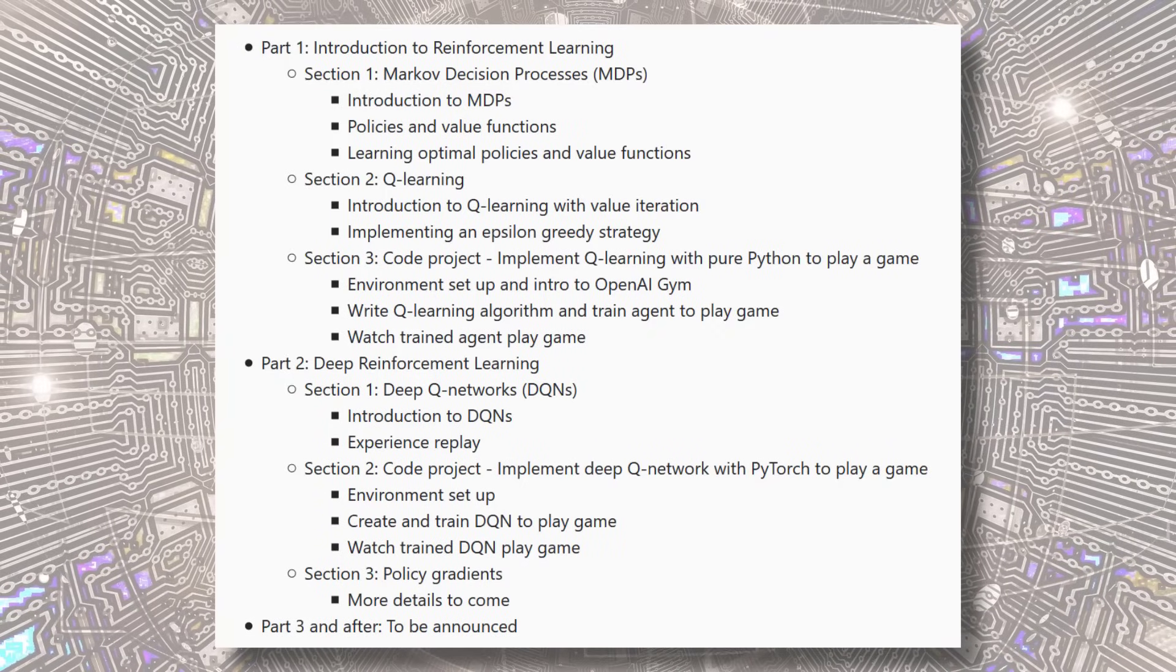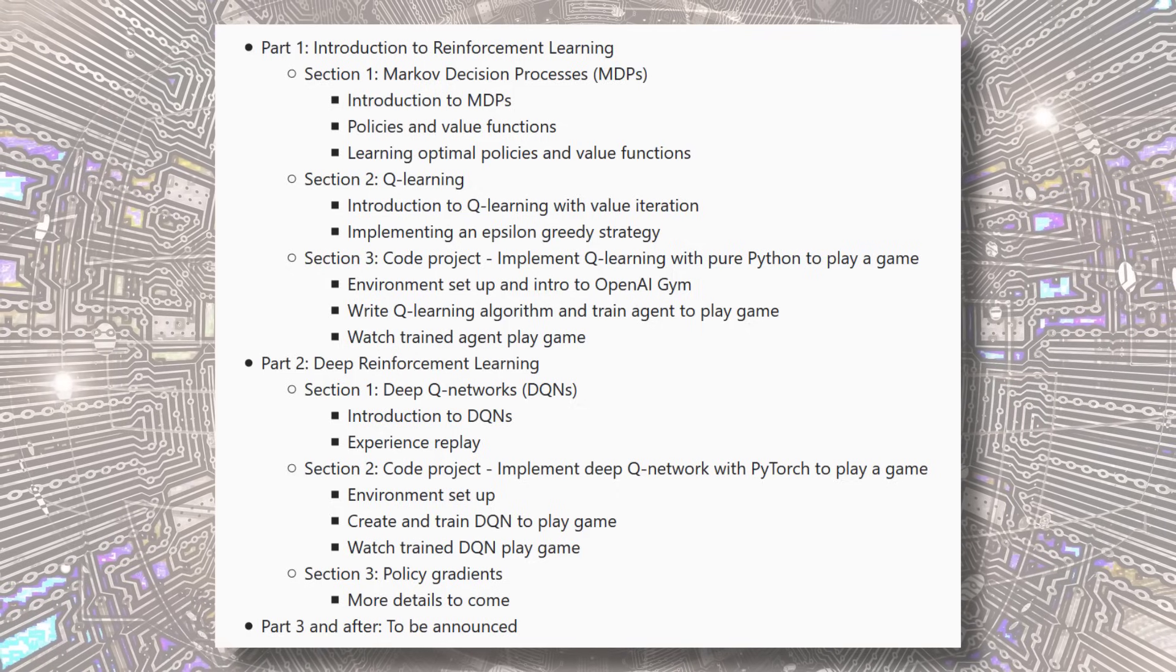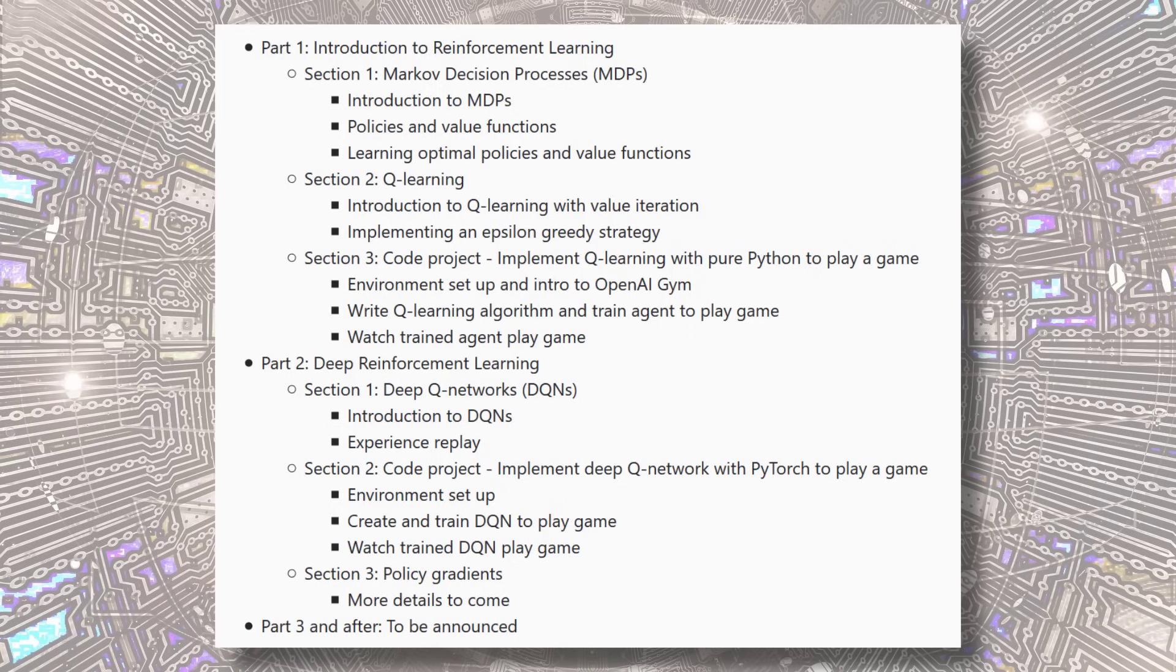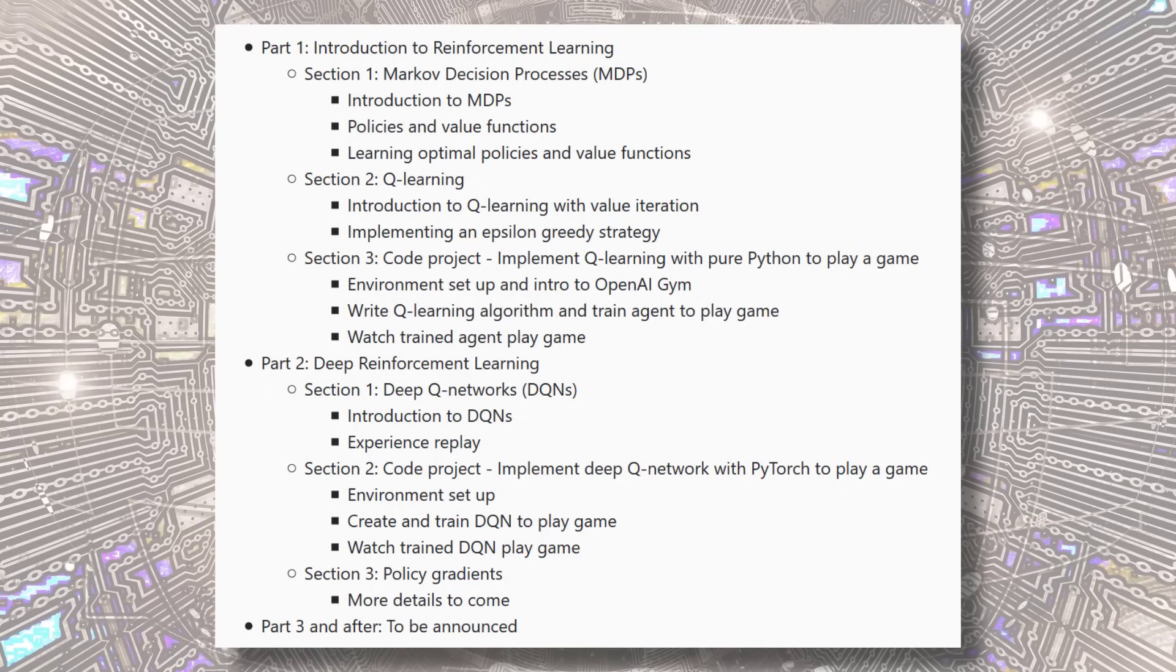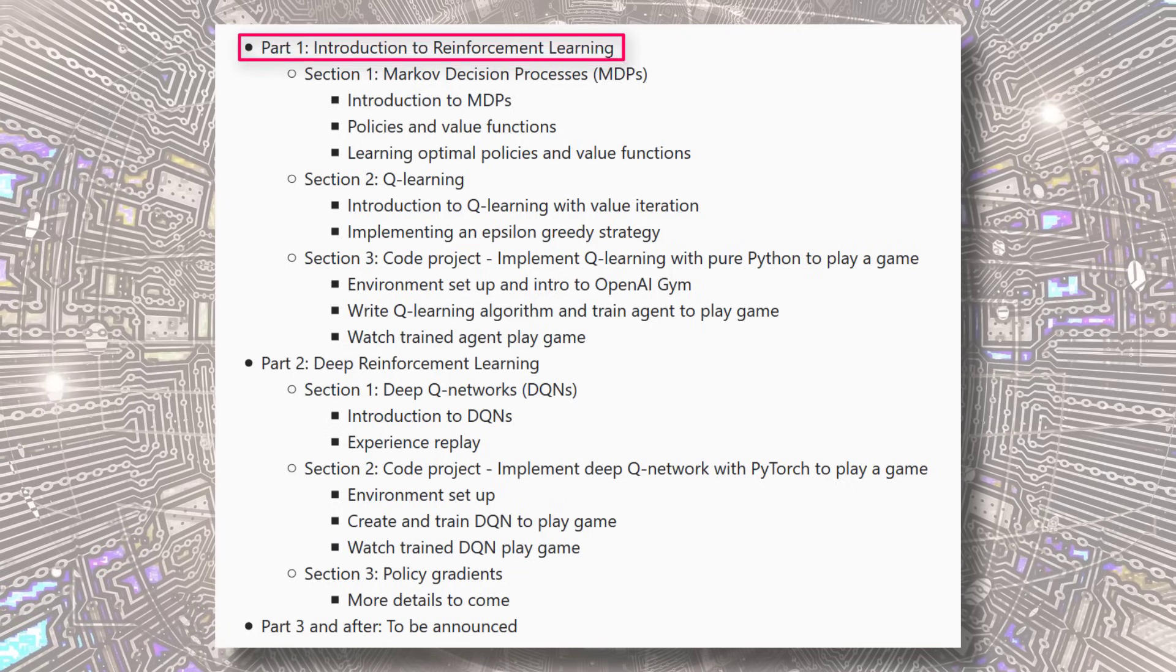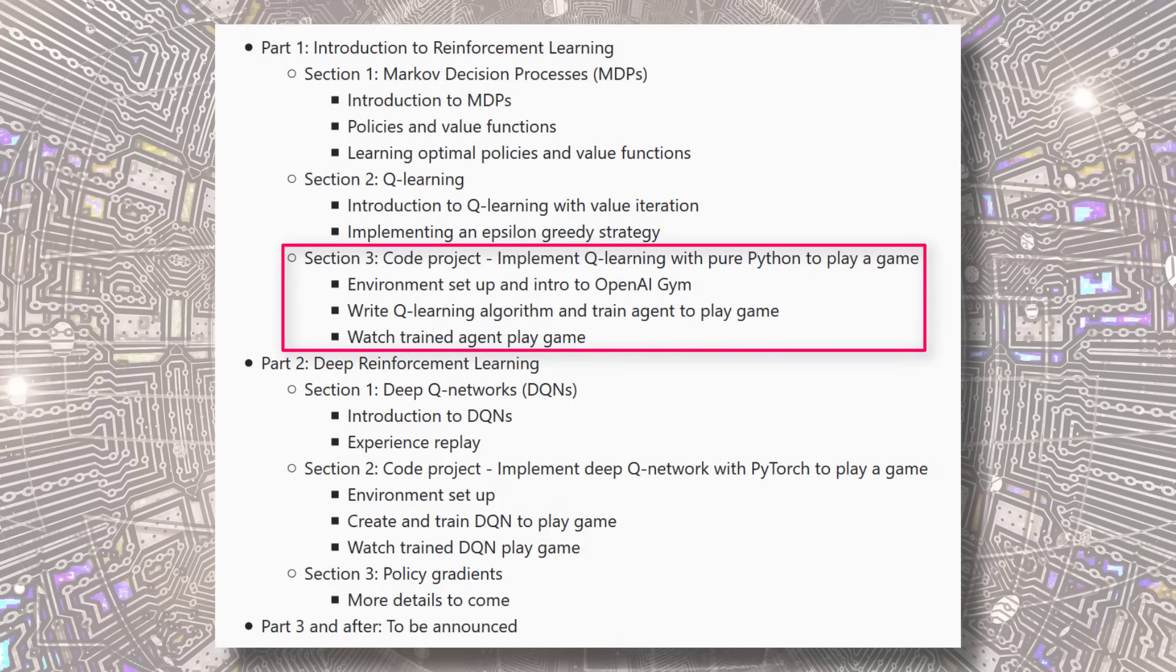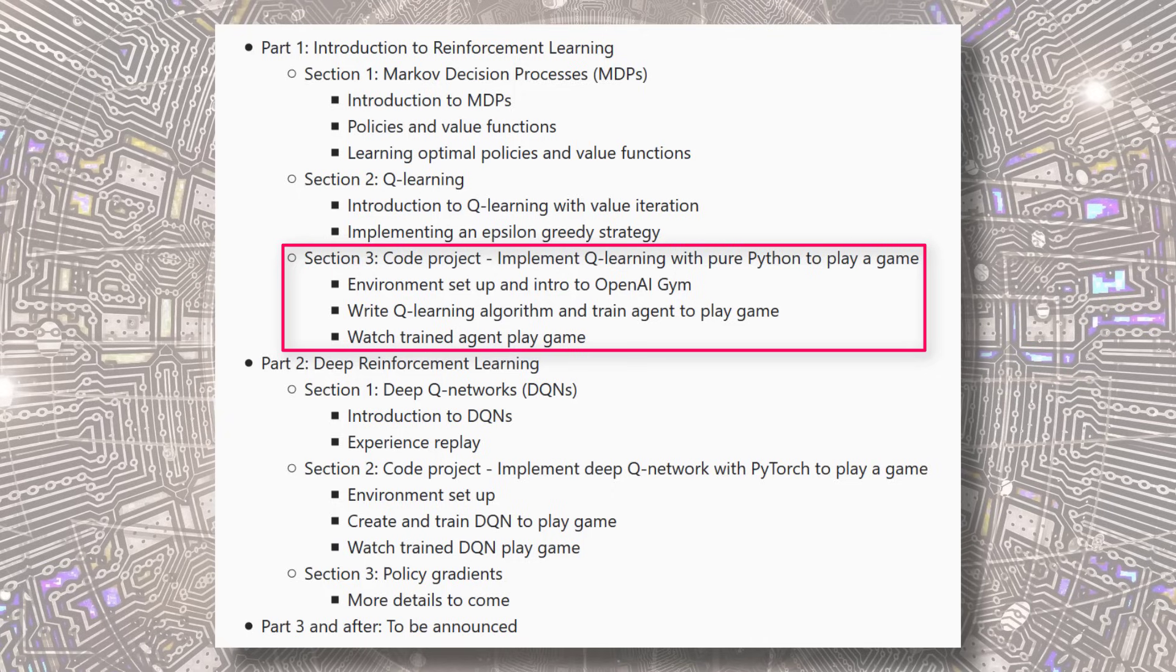Here's the syllabus for parts 1 and 2 of the series. We intend to add more parts and sections as the series progresses, so when this happens, we'll update the corresponding blog post for this video on DeepLizard.com, so be sure to take a peek back at that for updates every so often. We'll gain an introduction to reinforcement learning in part 1 of the series. We'll first start off by learning about Markov decision processes, then we'll progress to Q-learning, and then we'll build our first reinforcement learning project in code where we'll implement Q-learning with pure Python to play a game.